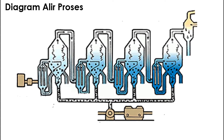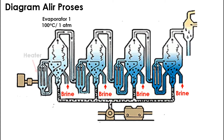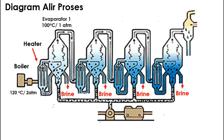Pada tahap awal, larutan garam pekat diumpankan ke dalam multiple evaporator. Evaporator kemudian divakumkan sehingga dari evaporator satu ke evaporator lainnya titik didinya menurun. Evaporator dipanaskan menggunakan heater. Panas dari heater diperoleh dari uap air boiler yang beroperasi pada suhu 120 derajat celcius tekanan 2 atm. Evaporator satu bekerja pada kondisi 100 derajat celcius tekanan 1 atm.